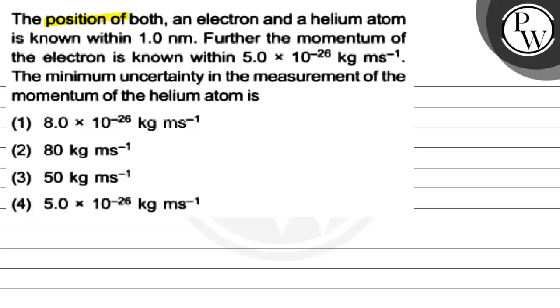Hello, let's read this question. The position of both an electron and a helium atom is known within one nanometer. Further, the momentum of the electron is known within 5 × 10⁻²⁶ kg·m/s. The minimum uncertainty in the measurement of momentum of the helium atom is: